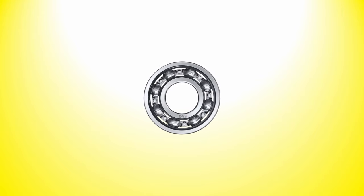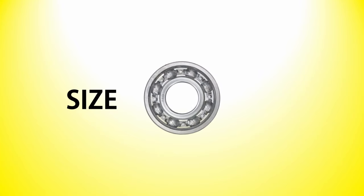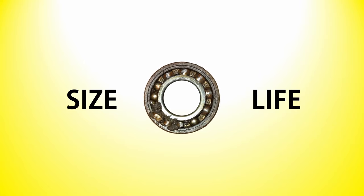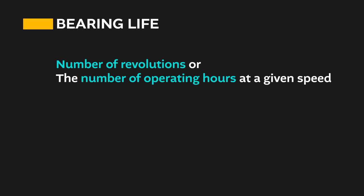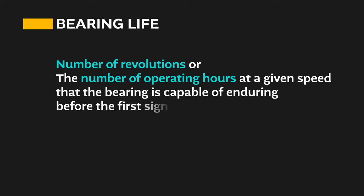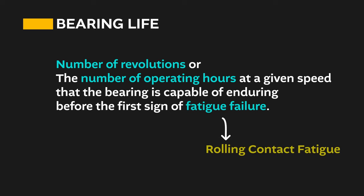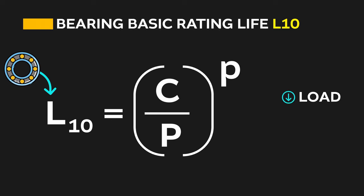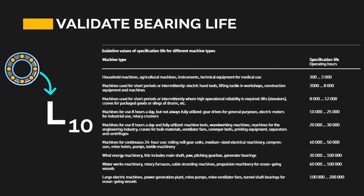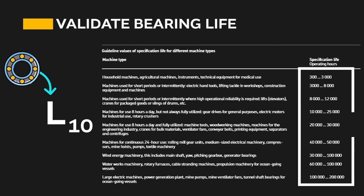In the case of bearings, instead of calculating the size, we actually calculate and validate the life of our selected bearing size for a given load and speed. The bearing life means the number of revolutions or operating hours at a given speed that a bearing is capable of ensuring before the first sign of fatigue failure — rolling contact fatigue (RCF). We calculate this using the bearing basic rating life L10 formula, and then validate the calculated rating life against the recommended life for the same type of machine.